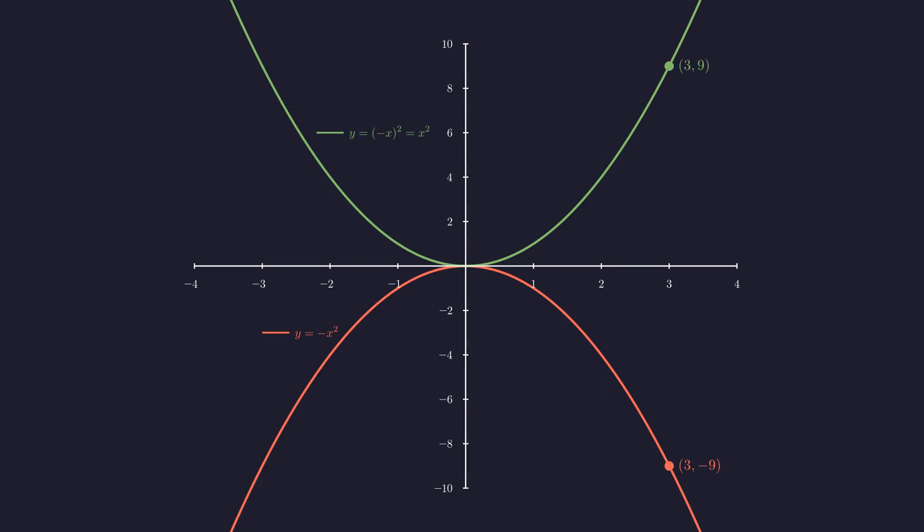At x equals 3, the red curve gives us negative 9, while the green curve gives us positive 9. The visual completely confirms our calculation.